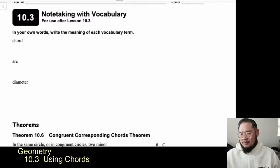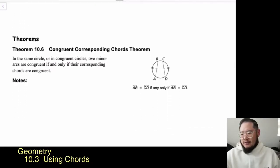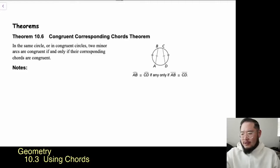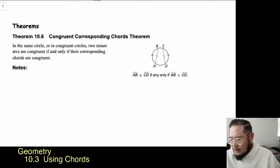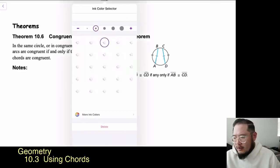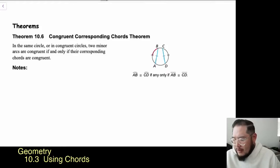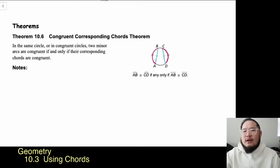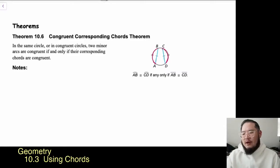Let's check out some theorems. The first one is Theorem 10.6, the Congruent Corresponding Chords Theorem. In this circle, we see two chords — chord CD and chord AB, highlighted in blue. What we're saying is that because these two chords are congruent, the arcs from A to B and C to D are congruent as well. In the same circle or in congruent circles, two minor arcs are congruent if and only if their corresponding chords are congruent.